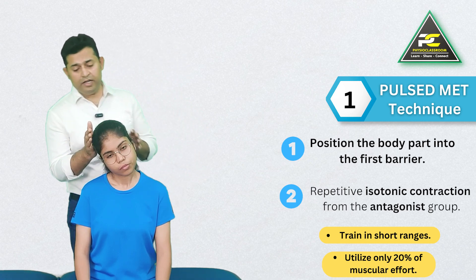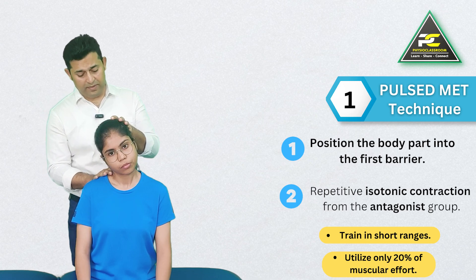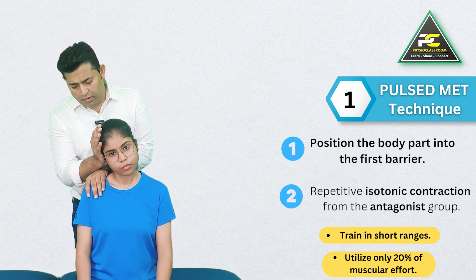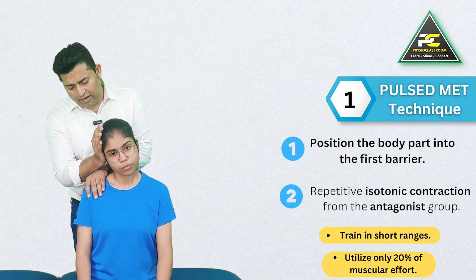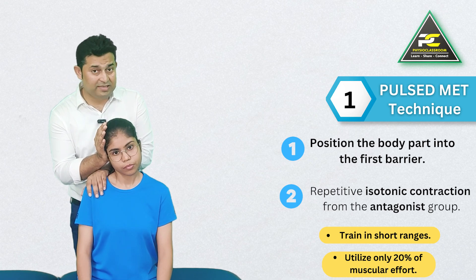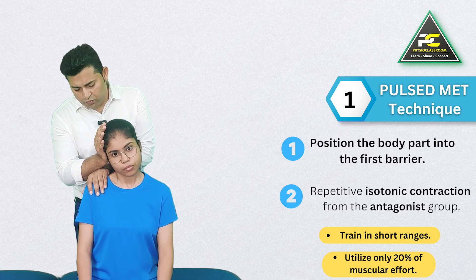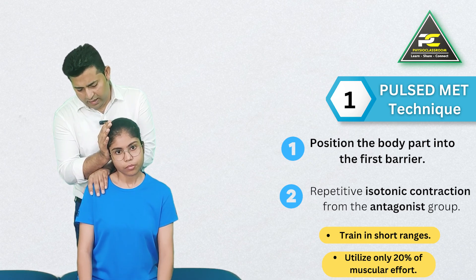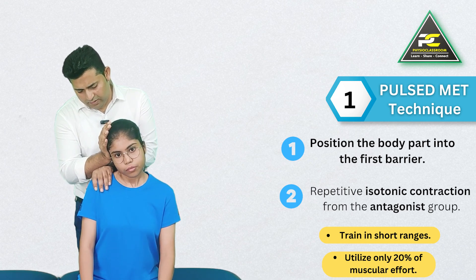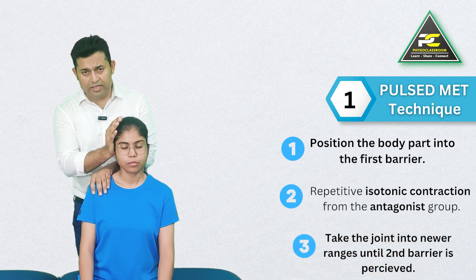The technique looks like this: with 20% effort, the patient tries to bring the ear and shoulder closer to one another, and this time the therapist allows the patient to win. The patient repeatedly brings the ear and shoulder closer and then relaxes. After multiple repetitions, the therapist takes the head and neck into the newer available range of motion.